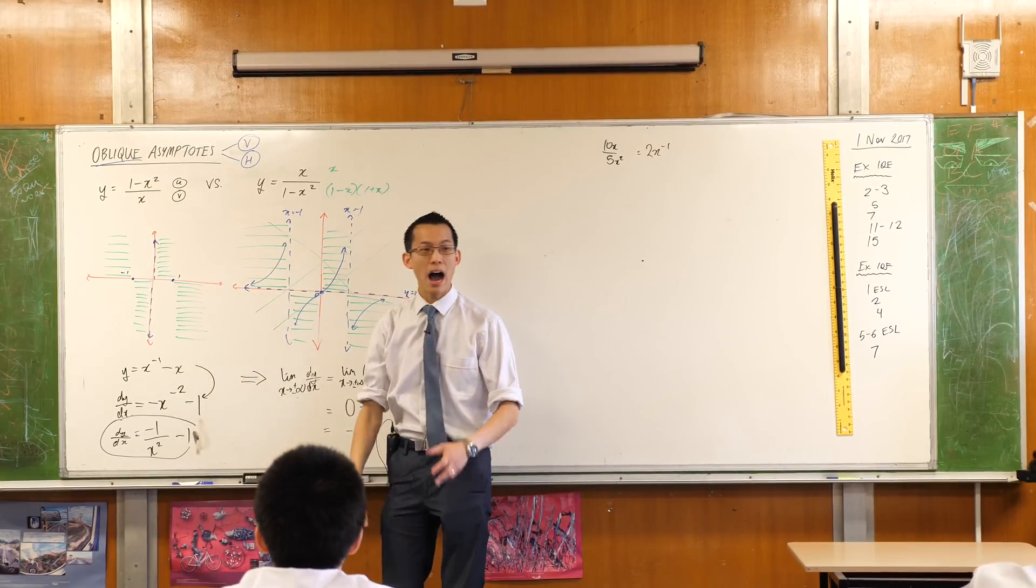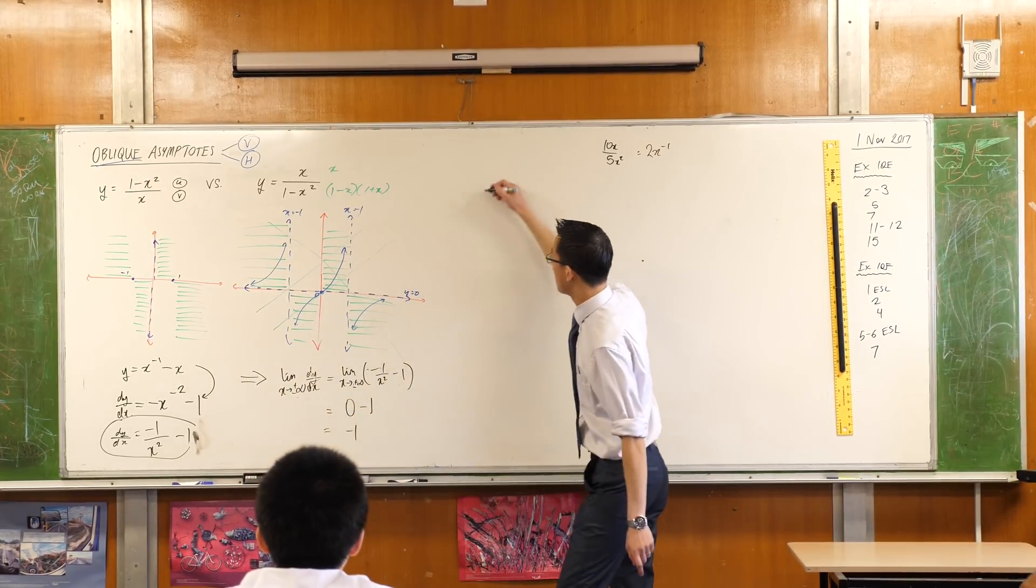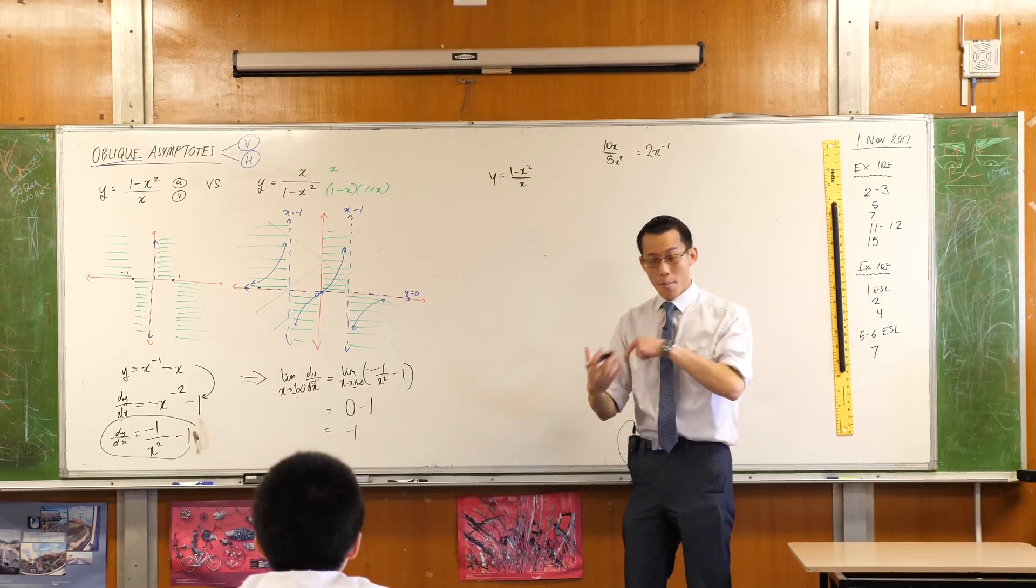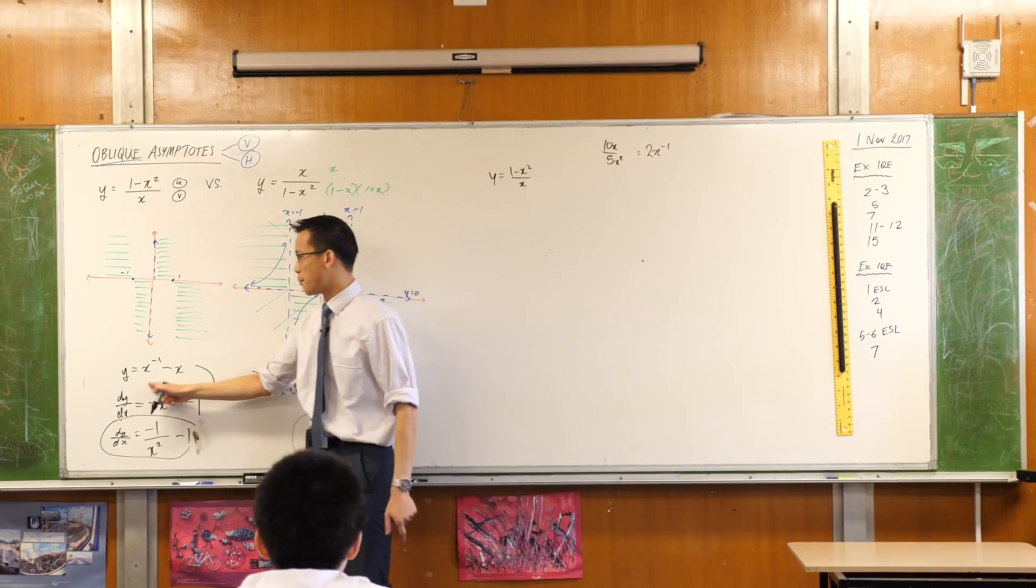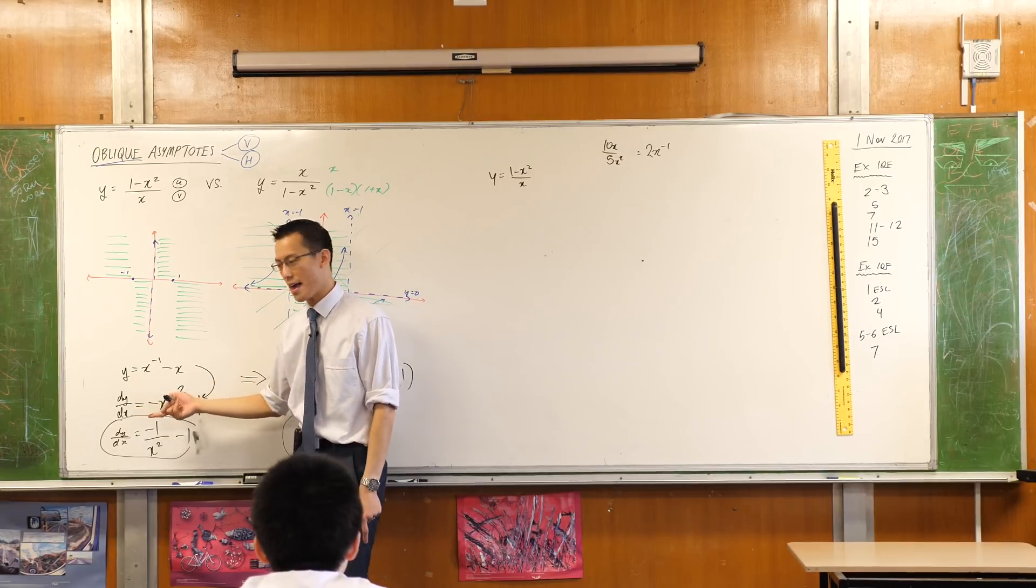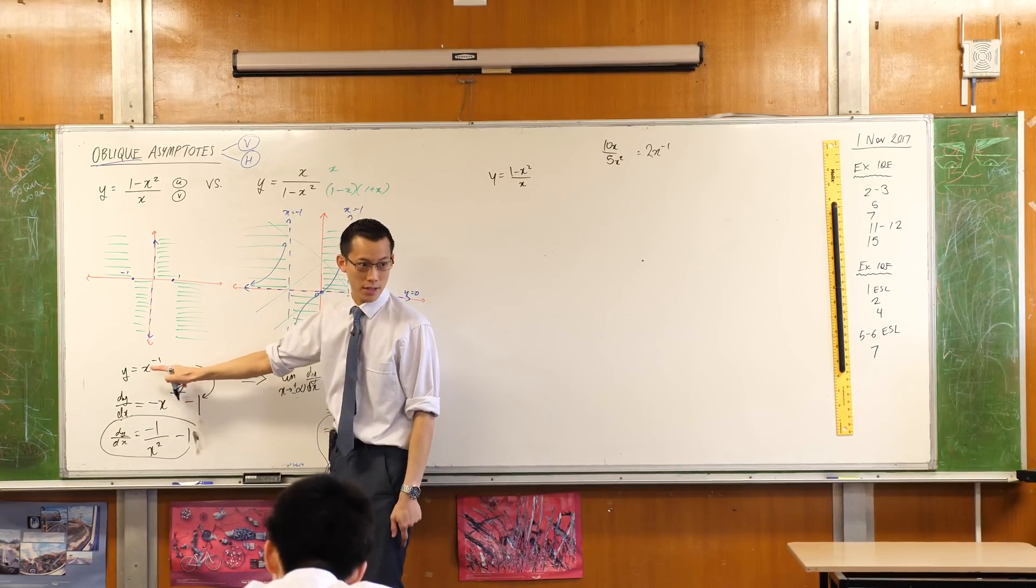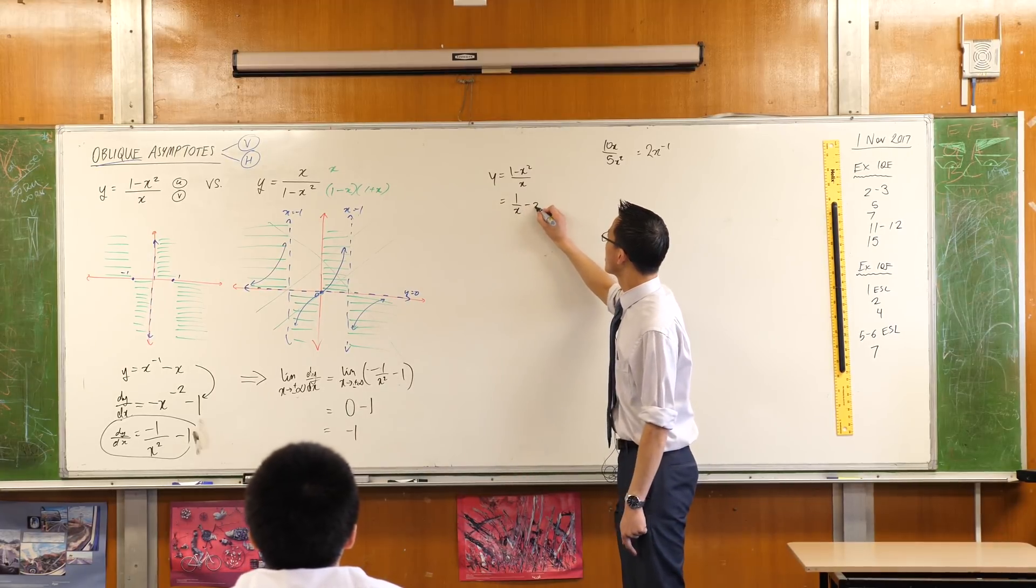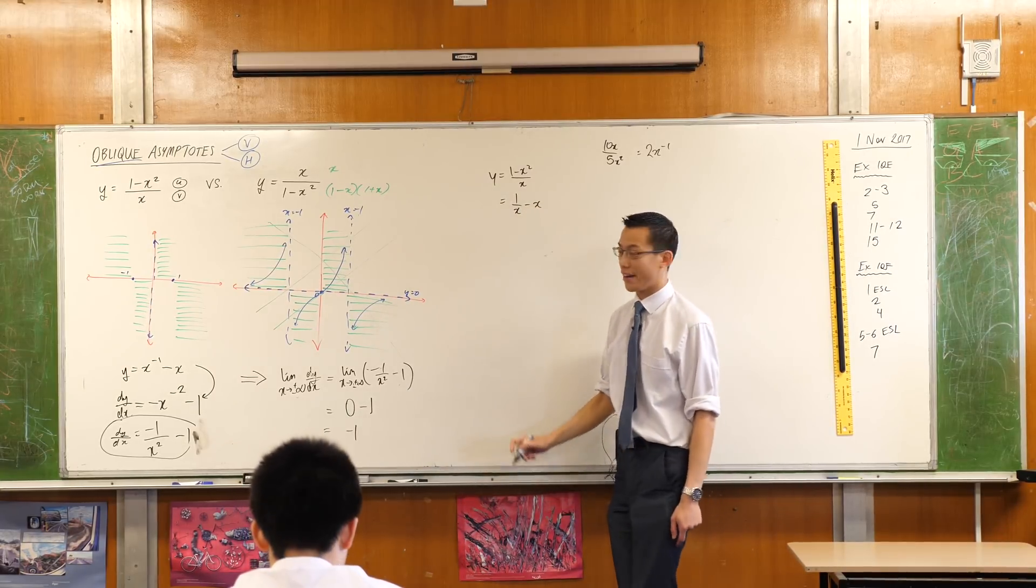I want us to come back to the original function. I've run out of space over here. So this is the original function. Remember, I separated this guy out for the purpose of differentiation. Do you remember that? And that's why I wrote it with this negative index. But if you write it without the negative index, like so, okay.